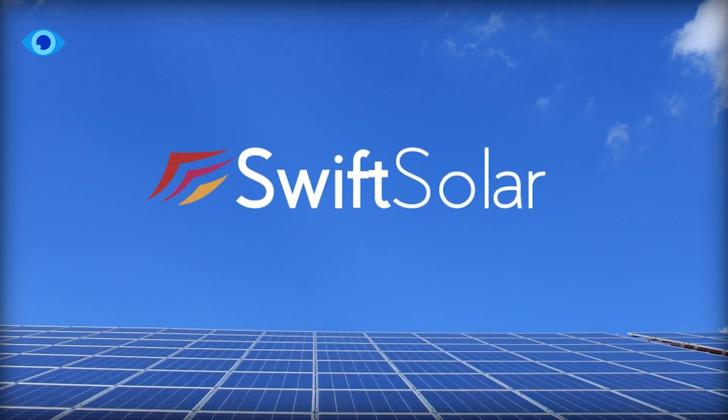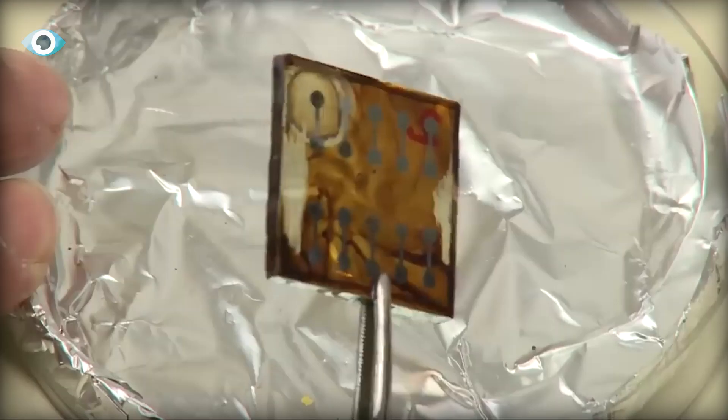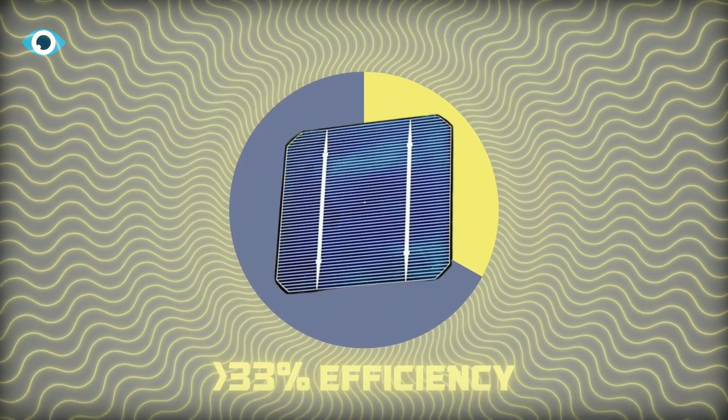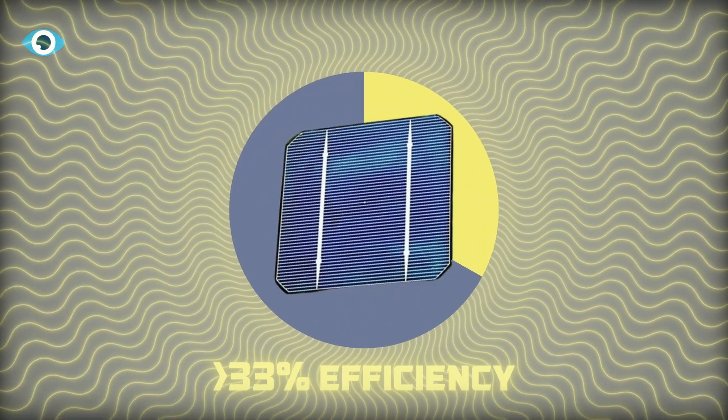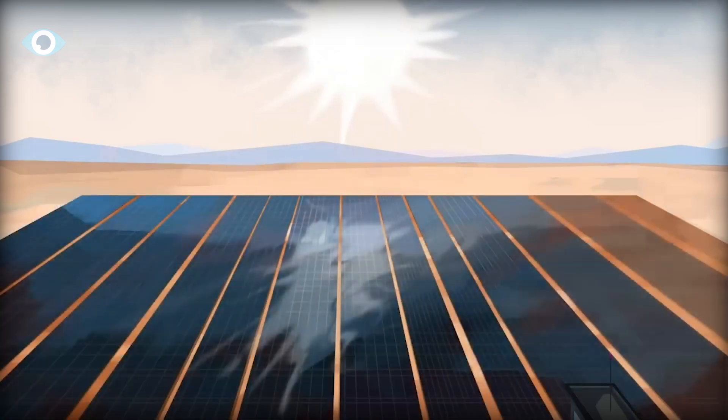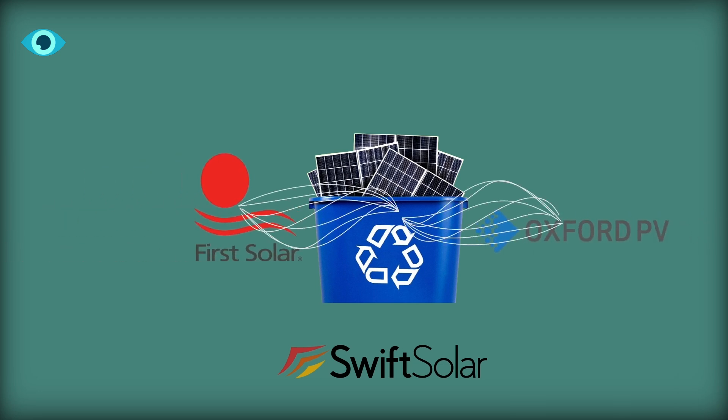Companies like Swift Solar have been working on this for years, and now they've hit a major milestone. These cells are more than 33% efficient, which is a big deal. Swift Solar wants to get its super-efficient panels on the market in just four years. Other companies like First Solar and Oxford PV are racing to do the same.